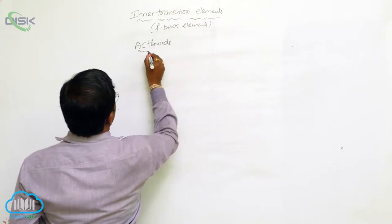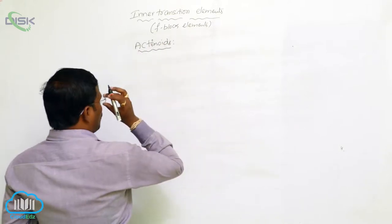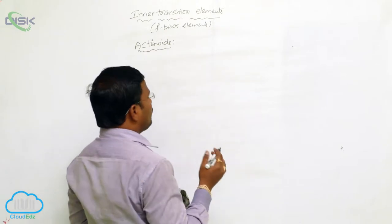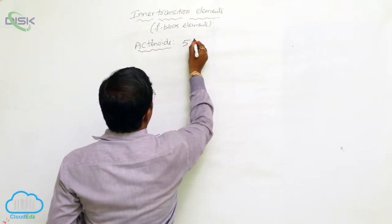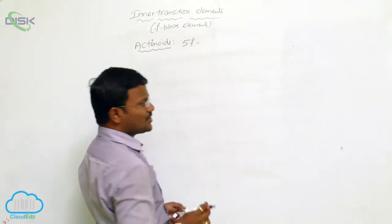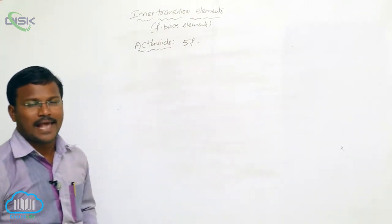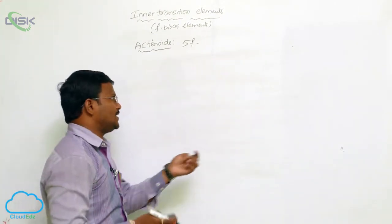Actinides. Out of the two series of inner transition elements, the 4F series of inner transition elements are generally termed as actinides because they start after actinium.